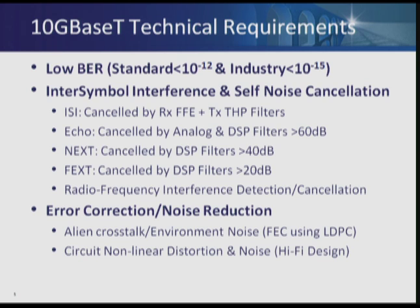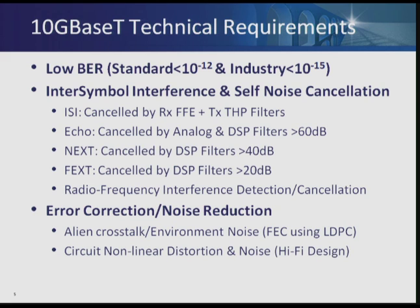Industry requirements dictate a bit error rate of 10 to the minus 15, even though the standard calls for 10 to the minus 12. To achieve this, from an equalization perspective we need pre-equalization in the form of Tomlinson-Harashima pre-coding, with a received feed-forward equalizer. From echo cancellation, you need at least 60 dB of echo cancellation, 40 dB of NEXT cancellation, and 20 dB of FEXT cancellation. On top of that, you need to be very cognizant of radio frequency interference. As walkie-talkies are turned on, common mode couples onto the wire and gets translated to differential, requiring UHF and VHF interference cancellation.